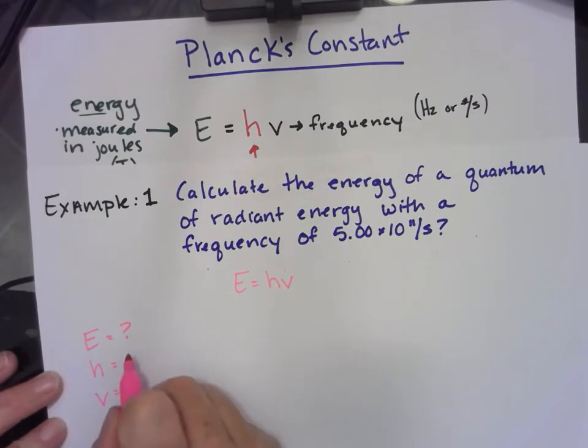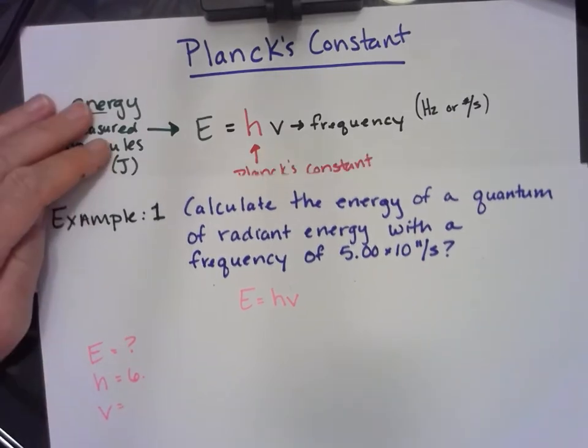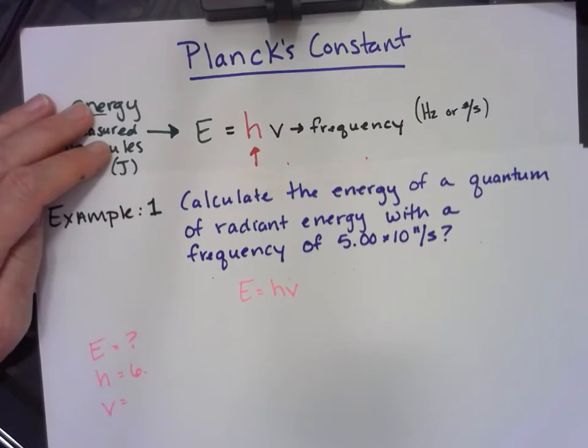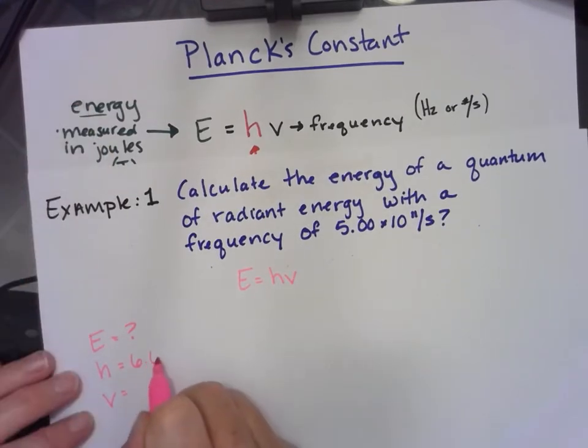Planck's constant we always have. I'm going to rewrite it here. 6.63 times 10 to the negative 34 joules times seconds.